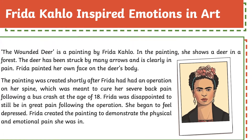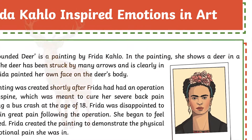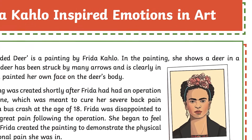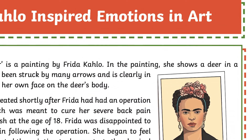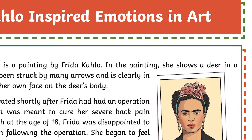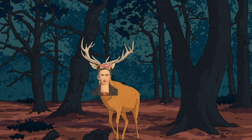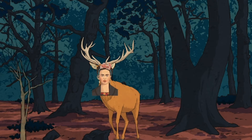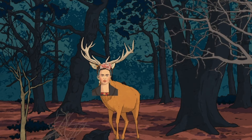This art activity is based on the piece of art The Wounded Deer by Frida Kahlo, and considers the link between emotions and art, encouraging children to think about how they can present emotions through their artwork. In The Wounded Deer, Frida Kahlo painted her own face on the body of a young deer who had been shot by arrows. The background is the forest with dead trees and broken branches, which implies the feeling of fear and desperation.